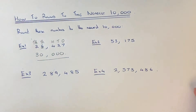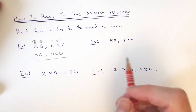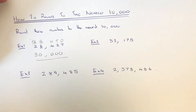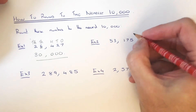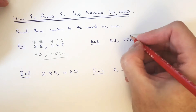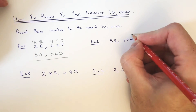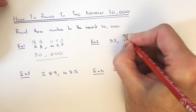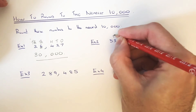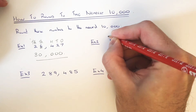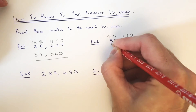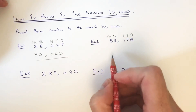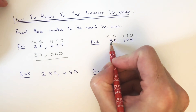Let's move on to example two. We've got round 53,175 to the nearest ten thousand. Again, if we identify the tens of thousands column: starting on the right hand side, that's the ones or units, then your tens, then your hundreds, then your thousands, and then your tens of thousands. At the moment we've got fifty thousand.